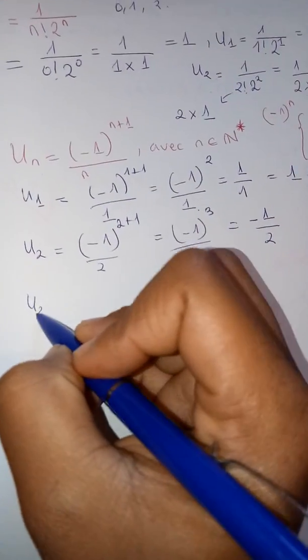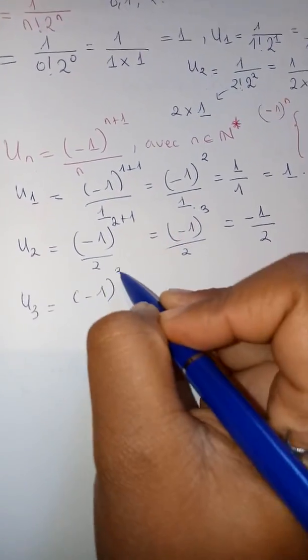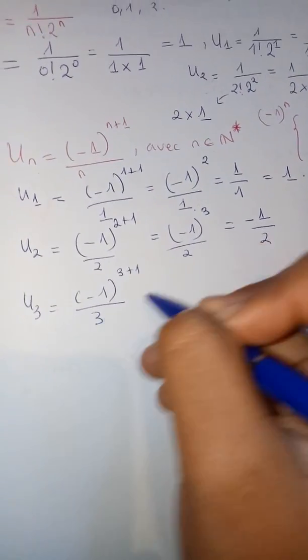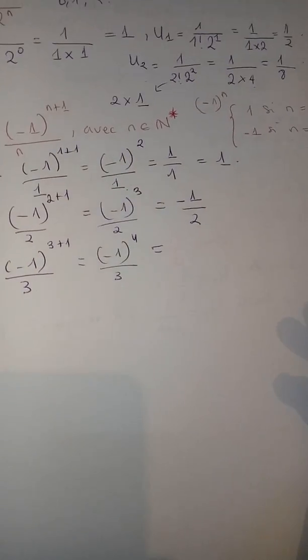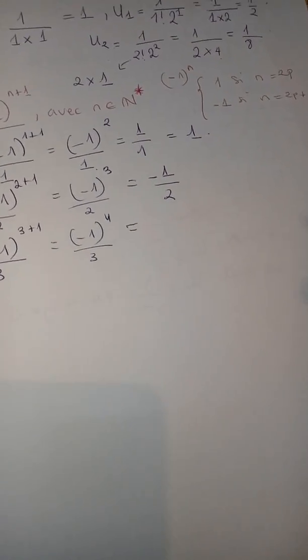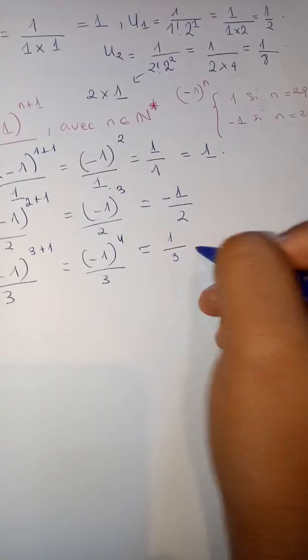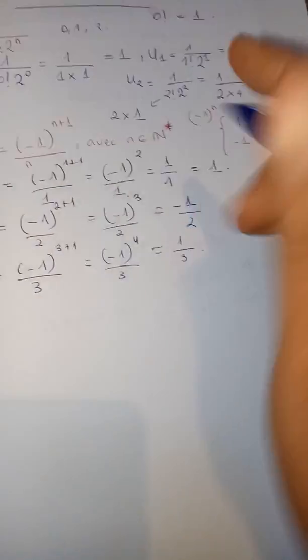The third term, $U_3 = (-1)^{3+1}/3 = (-1)^4/3$. Since 4 is an even number, we take 1, so we have $1/3$. The first three terms are $1$, $-1/2$, and $1/3$.